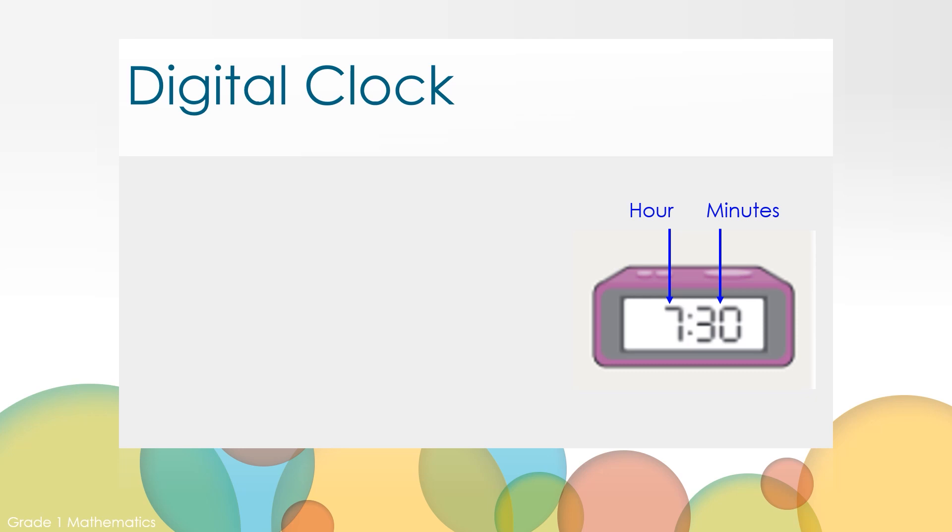What do you know about the time on this clock? The 30 shows me the number of minutes. I know it is half past because 30 minutes is half of one hour. What time is the clock showing? You can write or share your ideas. The time on the clock is 7:30. We could also say half past seven.